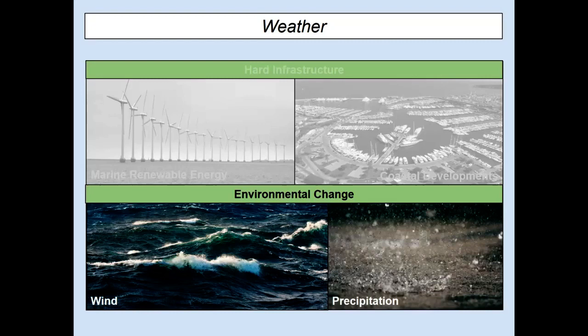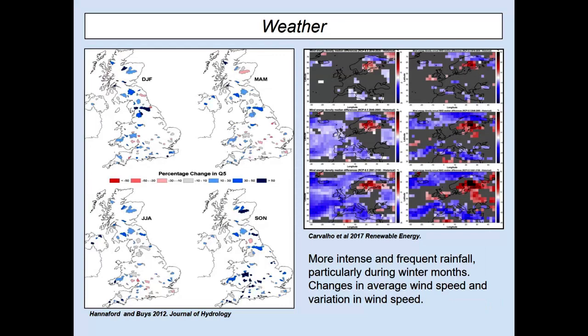These processes are most impacted by environmental change — changes in wind patterns and precipitation. Work shows that most places are getting more rainfall, particularly more intense rainfall in winter. Predictions for the next 40–50 years show that even though mean wind speed may be dropping, there will be more variation in wind speed. We will see changes in both precipitation and wind patterns, which can have an impact on the oceanographic processes I've just described.